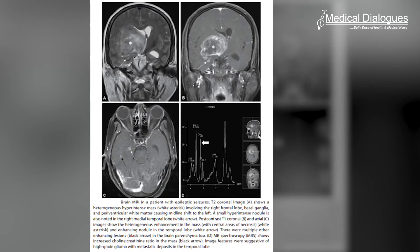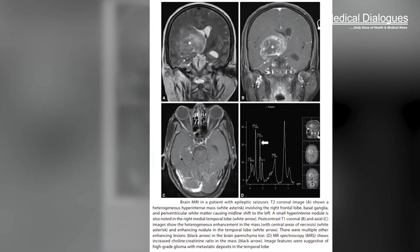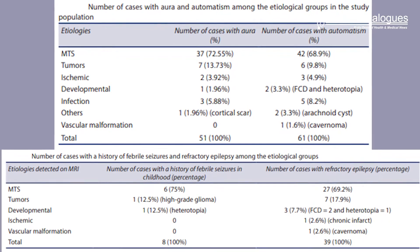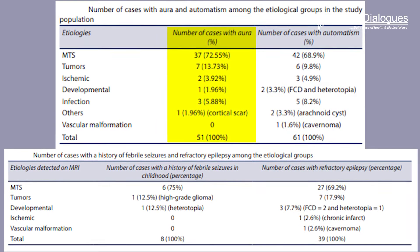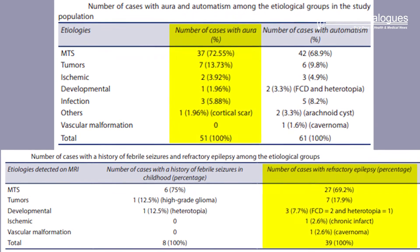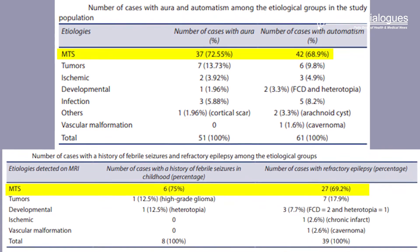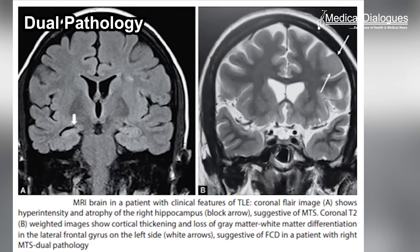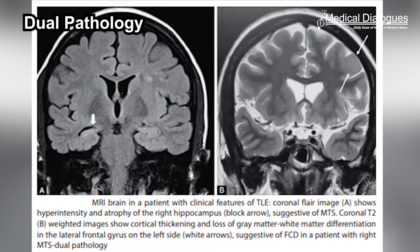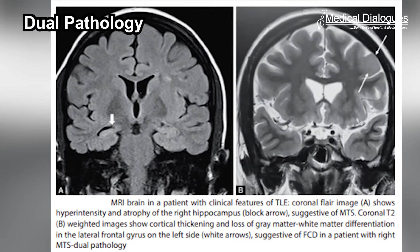The presence of dual pathology on MRI was associated with drug refractory epilepsy. The researchers concluded that the presence of aura and drug refractory epilepsy together point towards mesial temporal sclerosis. Dual pathology on MRI in temporal lobe epilepsy patients may also be a risk factor for drug refractory epilepsy.